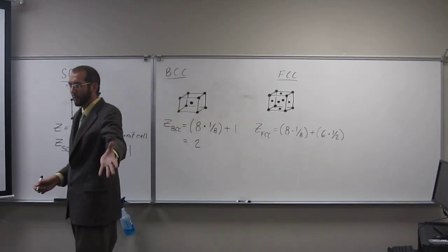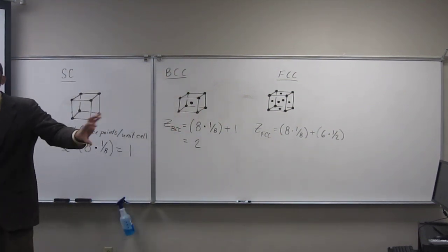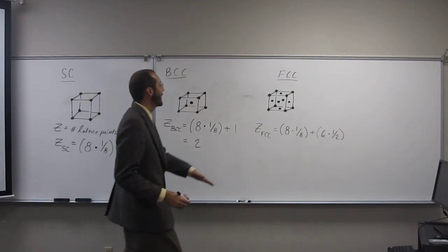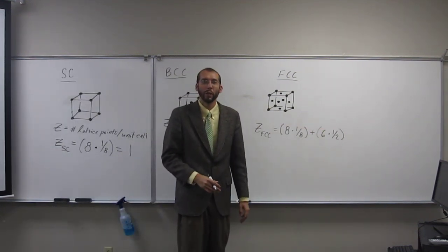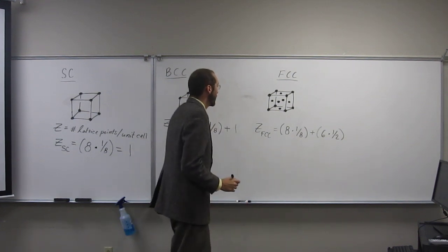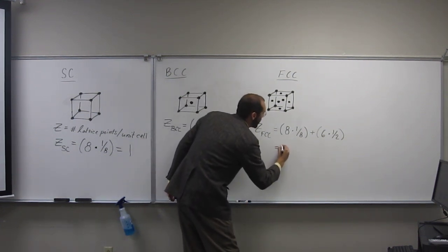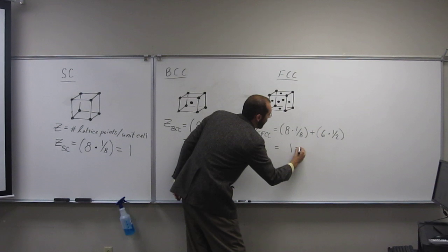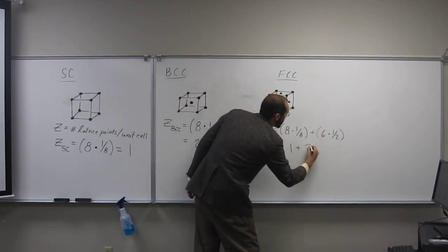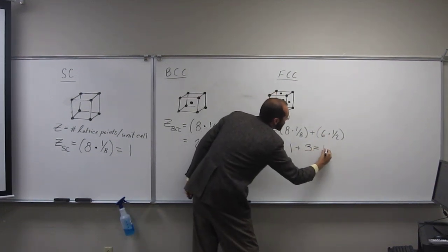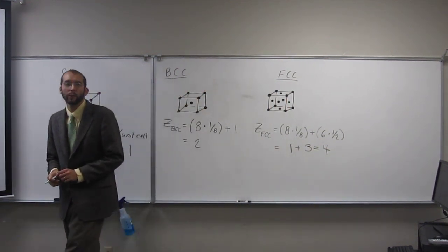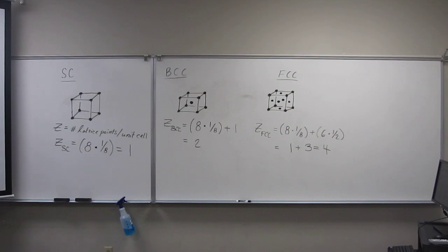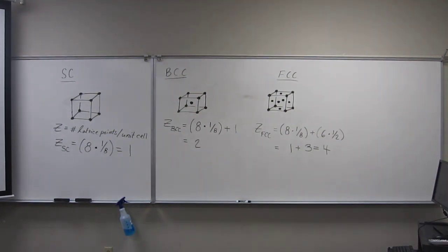And why would it be six? Because, of course, there's one on each one of the six faces, and there's half of that atom that's within the unit cell. Is everybody okay with that? Yeah. So, if we do this, of course, eight times one-eighth is one. Six times one-half is three. So, one plus three is four. So, the number of lattice points for the face-centered cubic is going to be four. Is everybody okay with this?